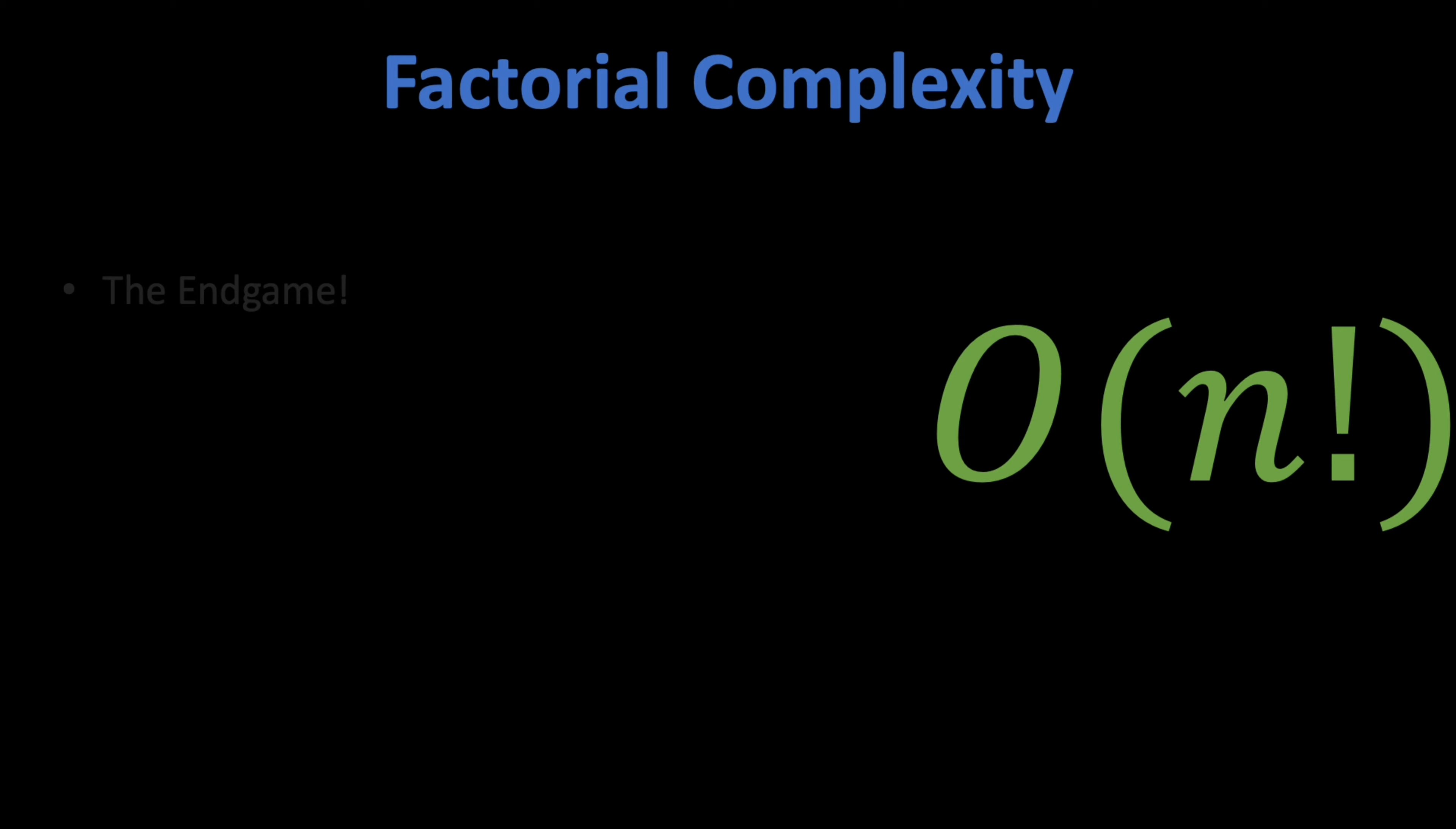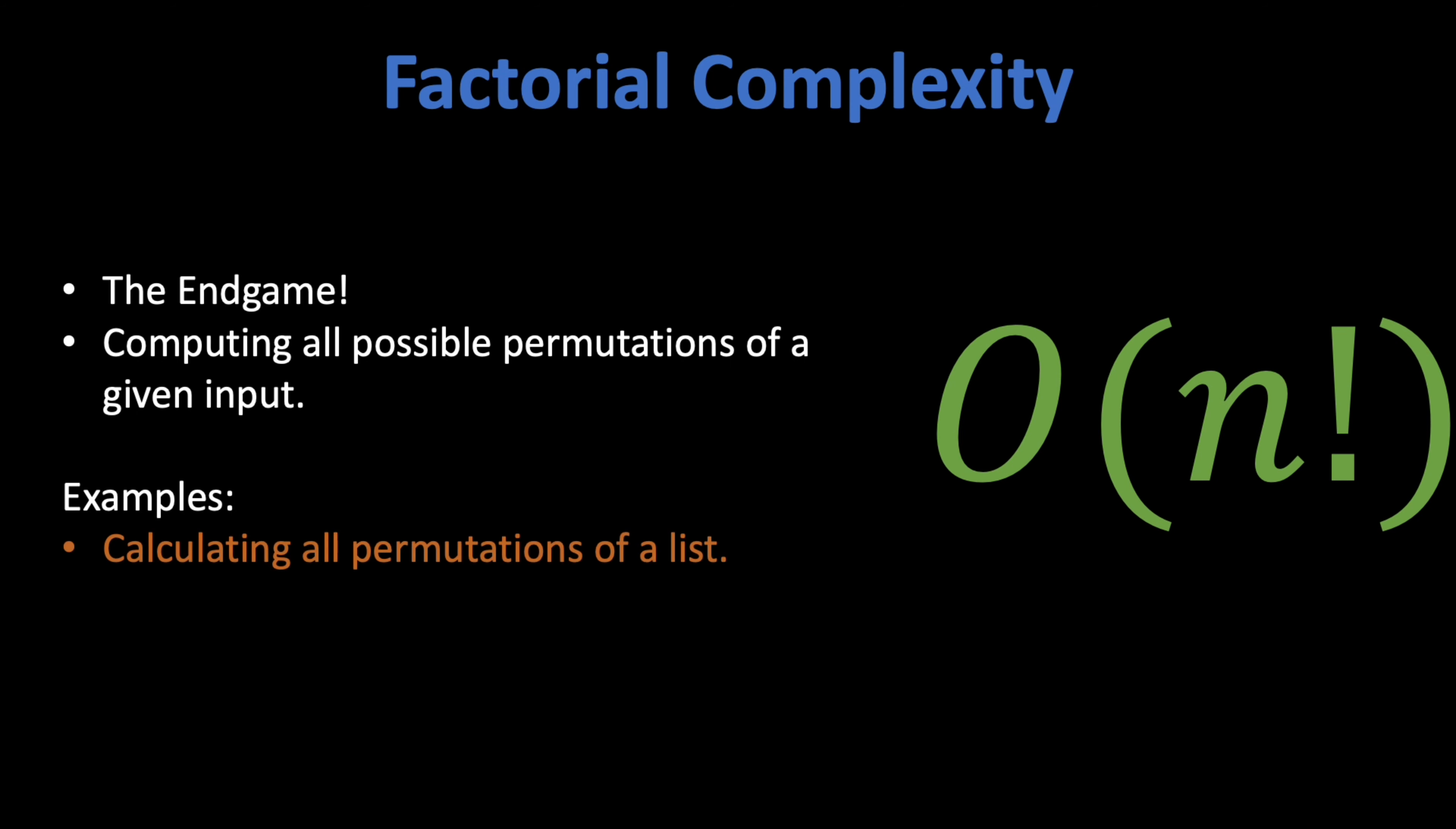Factorial complexity O(n!). This is the end game. Factorial complexity means that you are trying to compute all possible permutations of a given input. You might remember that in high school you are taught how to calculate all possible permutations of a list. Now that is your factorial time complexity. Brute force solutions to traveling salesman problem is also O(n!) where you basically calculate all possible paths to your destination and then take the shortest one. Of course there are much more creative and efficient approaches to solving it which I will get into in another video full of illustrations. If you want to see it when it's out, don't forget to sub so you won't miss it.